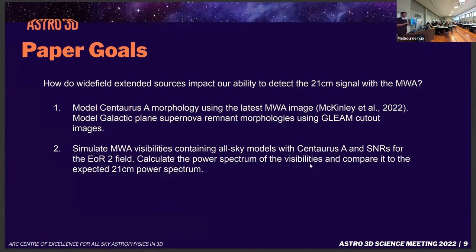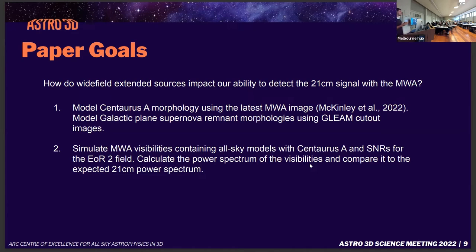So this paper was focused on trying to determine what level of contamination these wide-field extended sources might have on our ability to detect the 21 centimeter power spectrum. Particularly, it was focused on creating morphological models of Centaurus A and galactic plane supernova remnants, so we could then use these to perform simulations of MWA observations, generate visibilities, calculate power spectra, and then compare to the expected 21 centimeter power spectra.